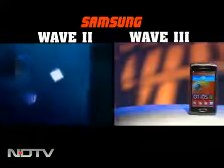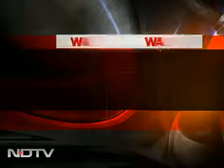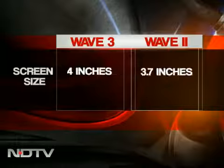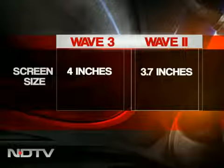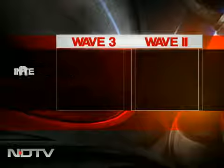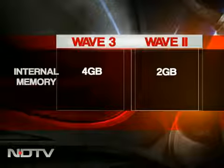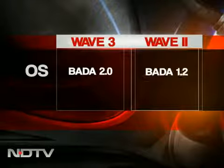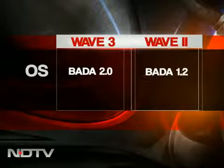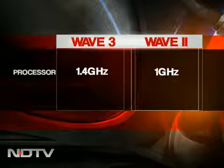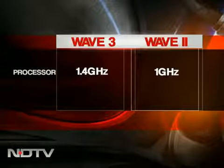Let's take a quick look at some of the key features between the Wave 2 and Wave 3. The screen of the Wave 3 is bigger at 4 inches, compared to the Wave 2 at 3.7 inches. The internal memory has also been boosted from 2GB in Wave 2 to 4GB. Most importantly, the operating system has been upped from Bada 1.2 to Bada 2.0, and the processor is speedier at 1.4GHz, better than the 1GHz in Wave 2.